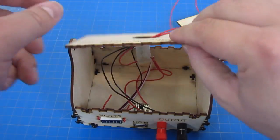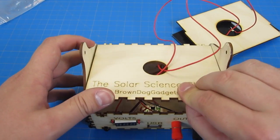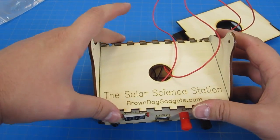Now all that's left to do is hook up the final pieces. Put the top of the solar science station box on, and put the screws to hold it in place in.